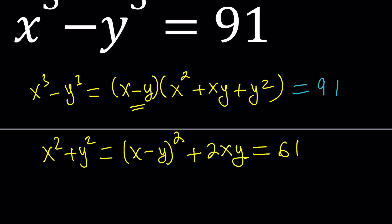Awesome. So we got something in terms of x minus y and xy. In the other equation, which is the cubic one, we got x minus y, xy, and x squared plus y squared. So I kind of need to get rid of this. But wait a minute. I already know what it is. I can just plug it in, right?